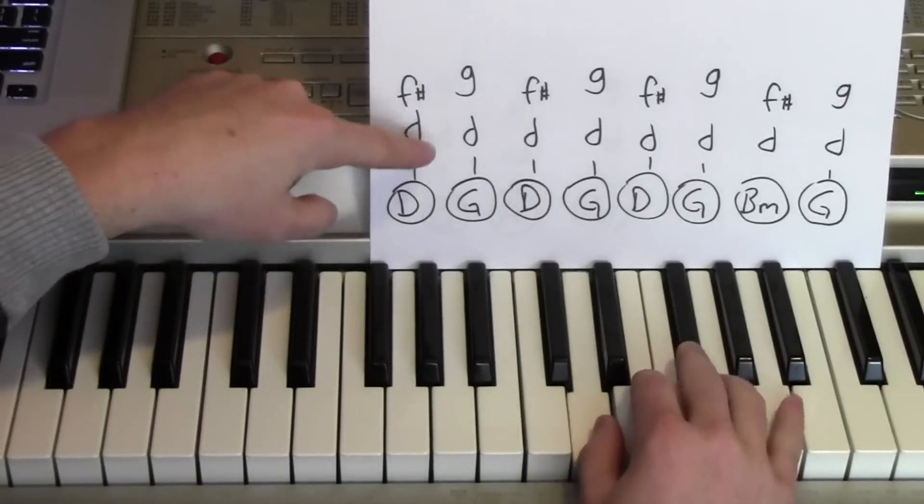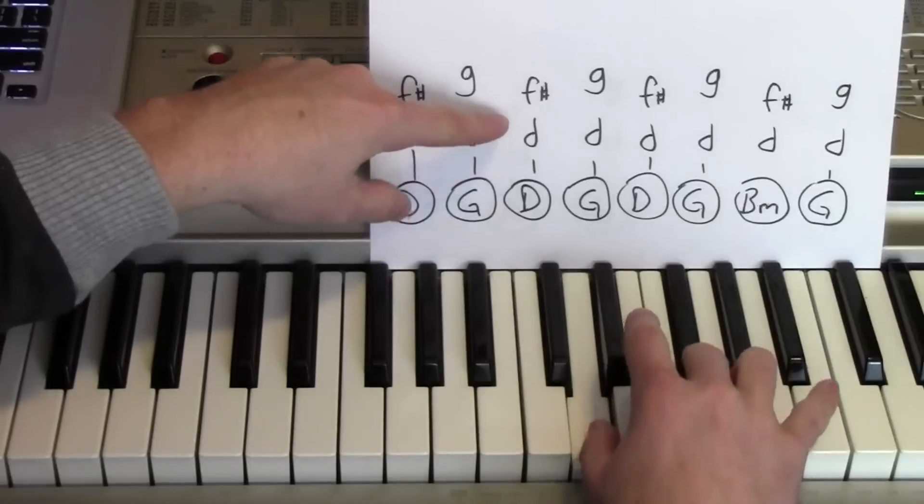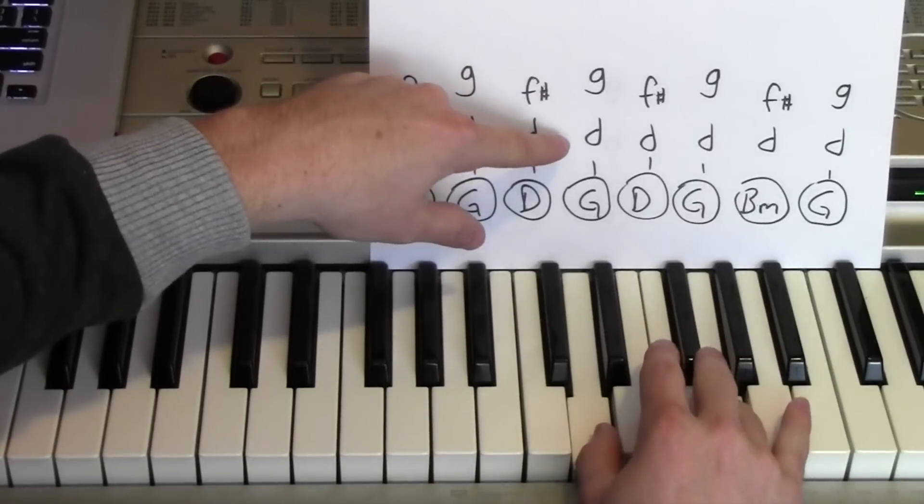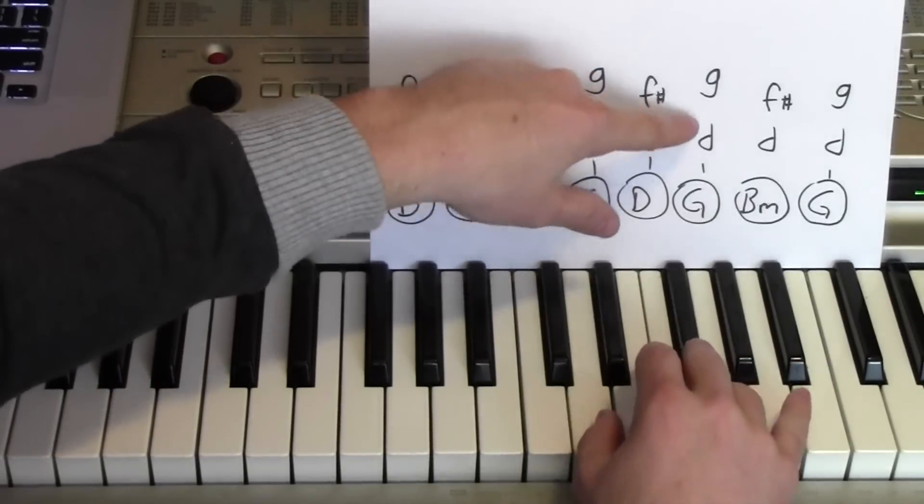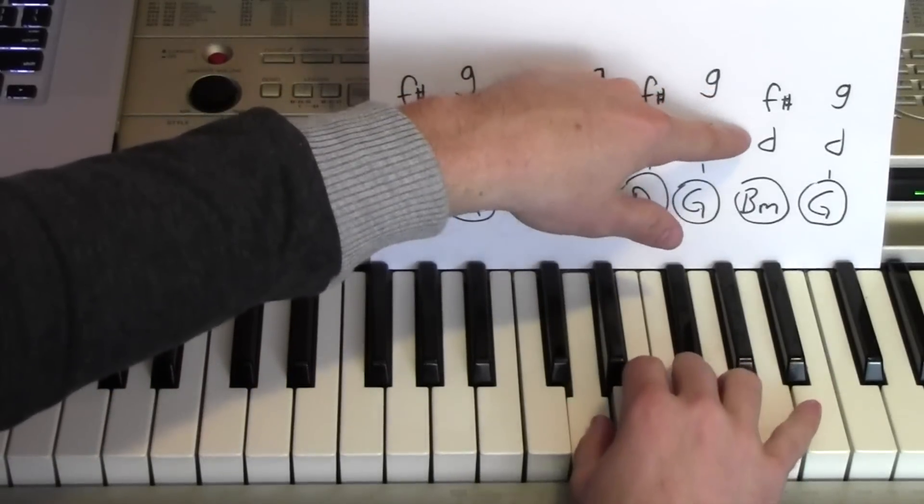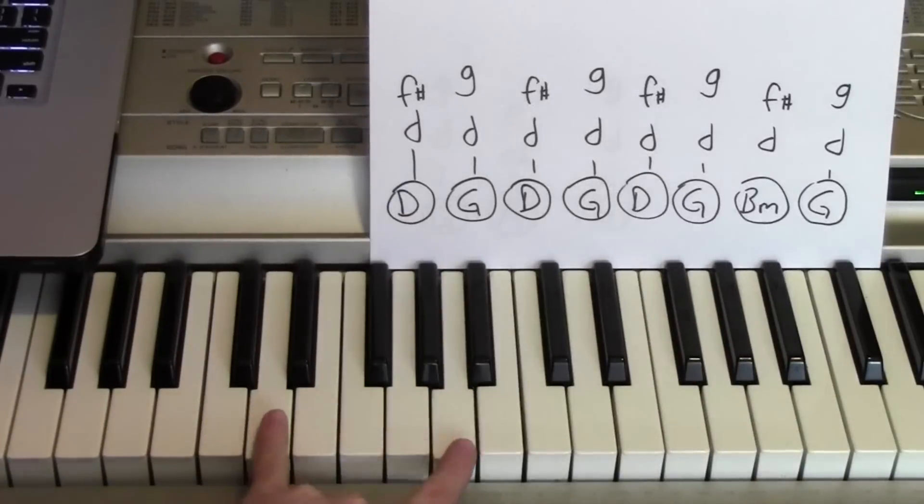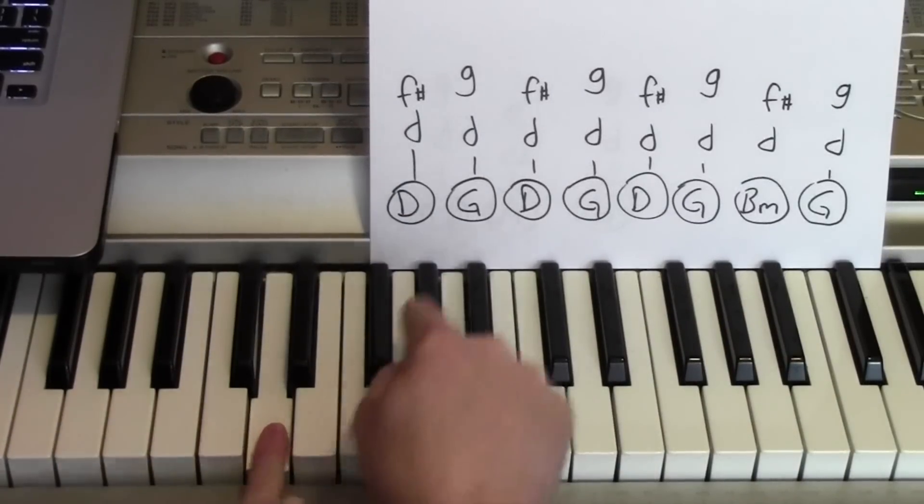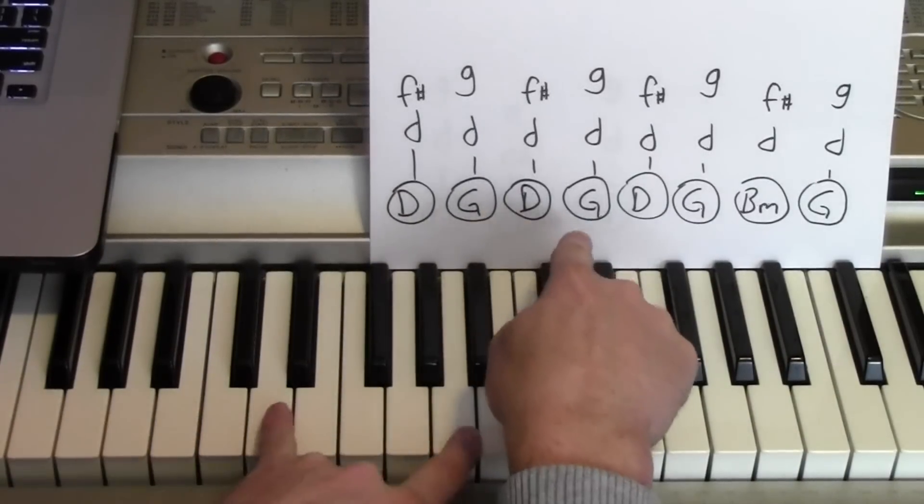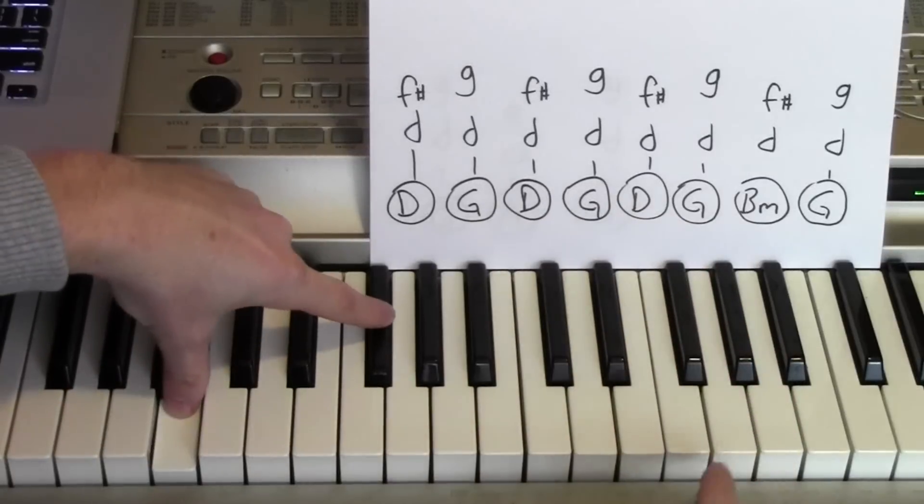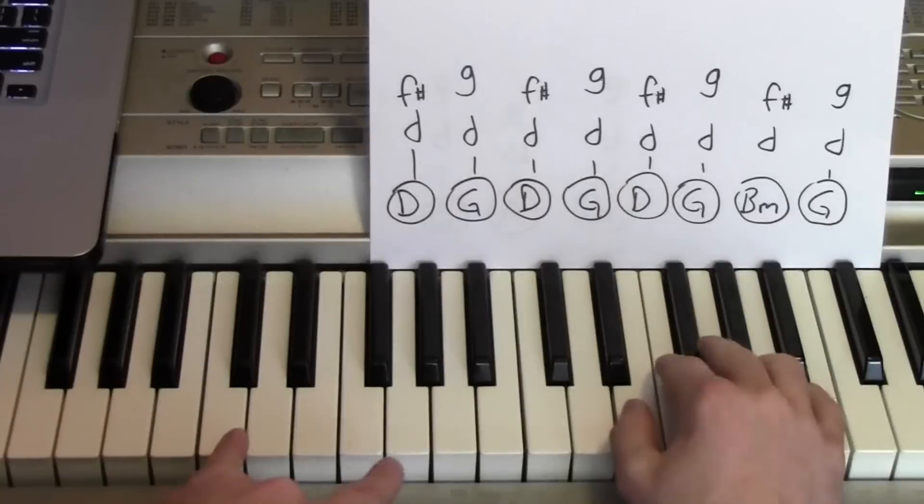For the first chord, D and F sharp, then D and G. My left hand I'm going from a D to a G, back and forth with D and G. For the B minor, those two again. So let's put that all together, start from the D.